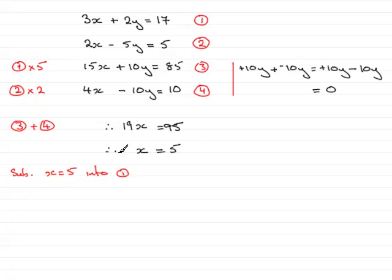Substituting x equals 5 into equation 1 gives 3 times 5 plus 2y equals 17. Tidying this up, we have 15 plus 2y equals 17. Subtract 15 from both sides and you have 2y equals 2. Divide both sides by 2 and you get y equals 1.